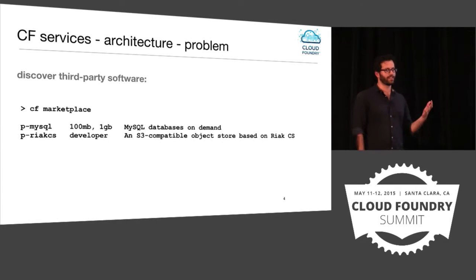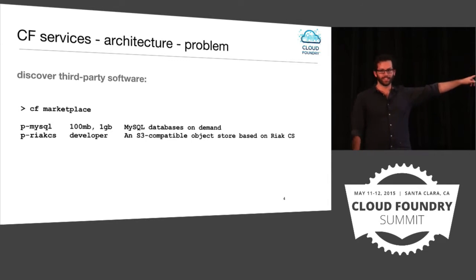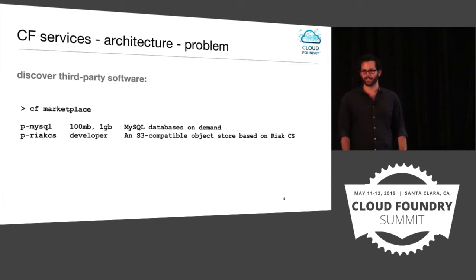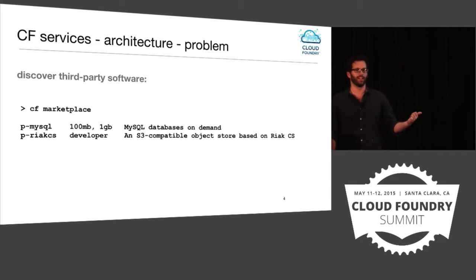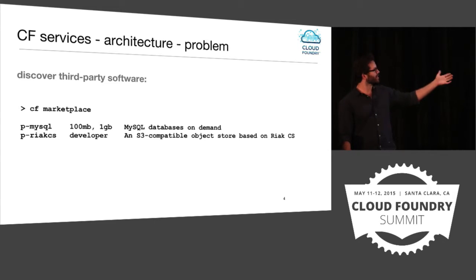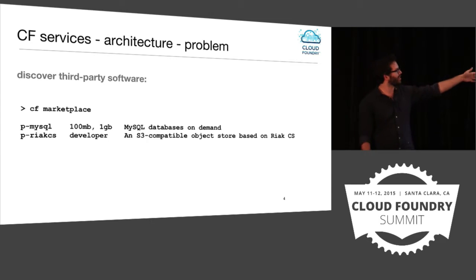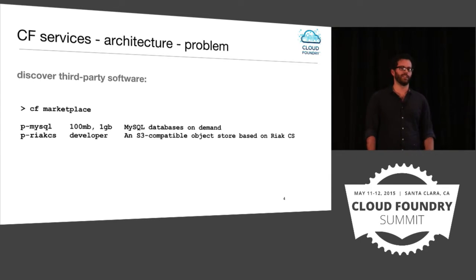We want to make sure software developers can find these services pretty easily. Really easy UX through the platform — something like CF Marketplace — would tell you these are the services your Cloud Foundry instance is currently offering. pMySQL and pReacts.js are two services that Pivotal builds. It lists services, and the second column shows different plan configurations, with a short description about what each service does.